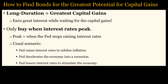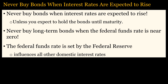Bonds with the longest durations have the greatest potential for capital gains. The key is to buy long-duration bonds when interest rates are at their peak. Because the Federal Reserve controls interest rates, interest rates will only go so high due to their negative effect on the economy. Usually the Fed raises rates to control inflation, but once inflation is subdued, the Fed lowers interest rates to try to prevent a recession — this is when bonds will increase in price, and long-duration bonds will increase the most. Never buy long-term bonds when the Federal Funds Rate is near zero, since interest rates can only go up. The Federal Funds Rate is set by the Federal Reserve and influences all other domestic interest rates.